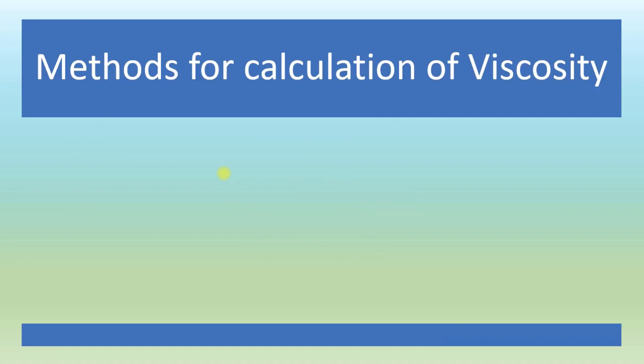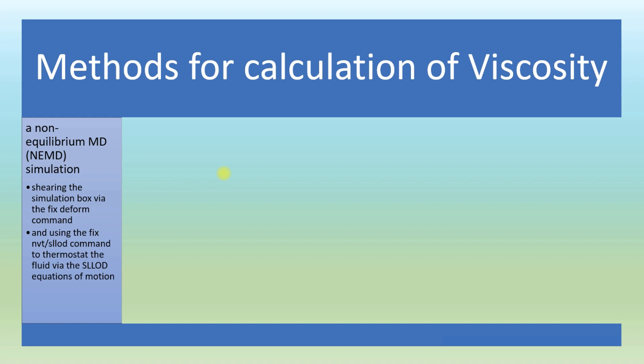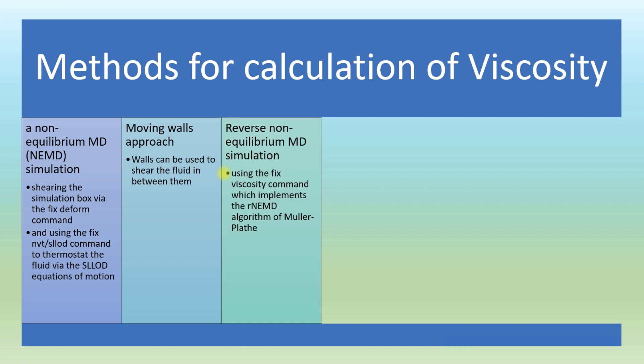How to calculate viscosity? There are many methods. First is non-equilibrium molecular dynamics (NEMD) simulation by shearing the simulation box via the fix deform command and using the fix NVT/sllod command to thermostat the fluid via the SLLOD equations of motion. Second is a setup of moving walls to shear the fluid between them. In this method, only the thermal (non-shearing) component of velocity is thermostated to prevent fluid heating. What is thermostating? Simply, thermostating is maintaining the temperature of a system—in this case, the fluid.